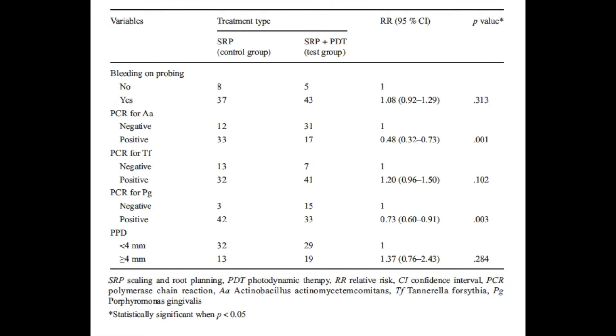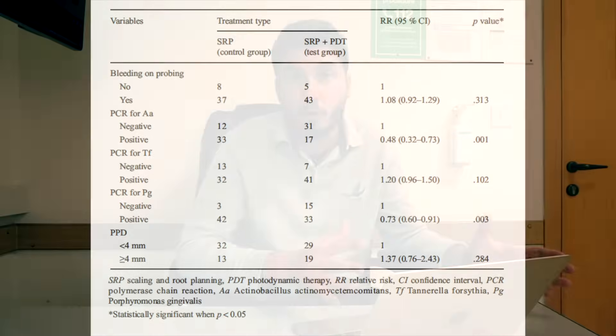SRP stands for scaling and root planing, and SRP plus PDT is scaling and root planing with photodynamic therapy using laser — that is the test group. They are not calculating chi-square here, but they could. P-values and relative risk numbers are also shown in the table.